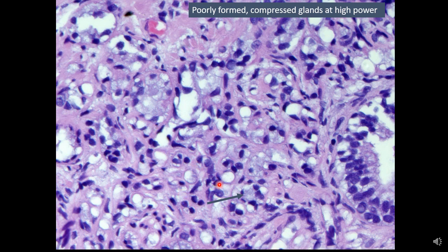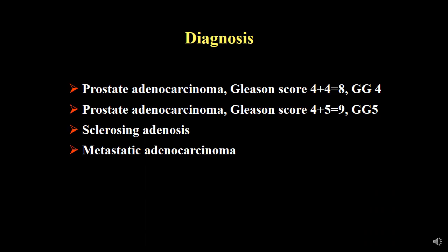You can also see some blue mucin in some of these glands, and also notice the stroma surrounding these glands appears to be very hyalinized and eosinophilic. The typical differential diagnosis in this type of case would include prostate adenocarcinoma grade group 4, grade group 5, benign sclerosing adenosis, and metastatic adenocarcinoma.